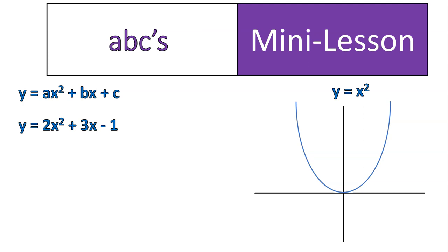First off, I want us to be able to identify what those values are. So here is an equation, 2x squared plus 3x minus 1. And in this equation, we would say a is equal to 2. Because it is the number before x squared.